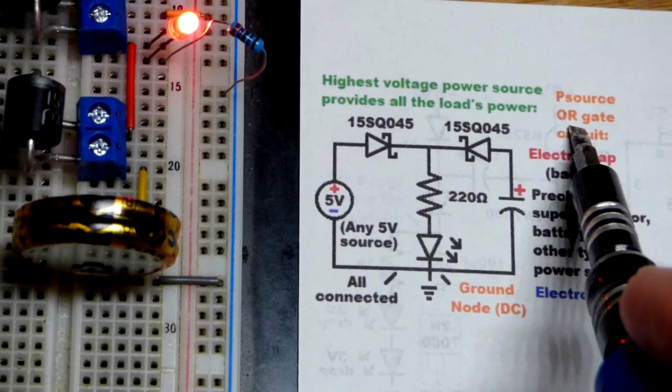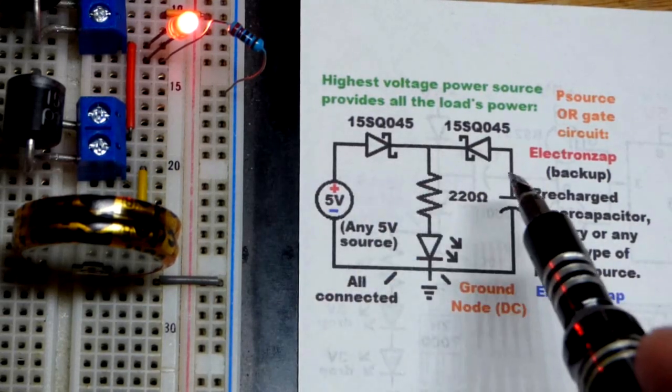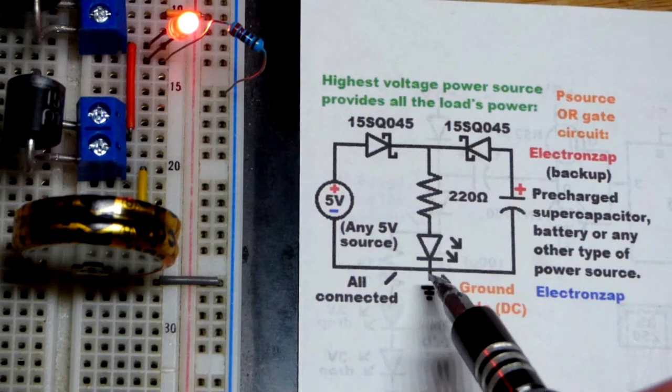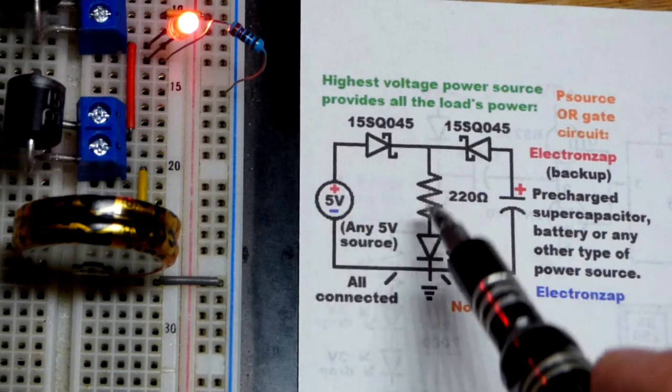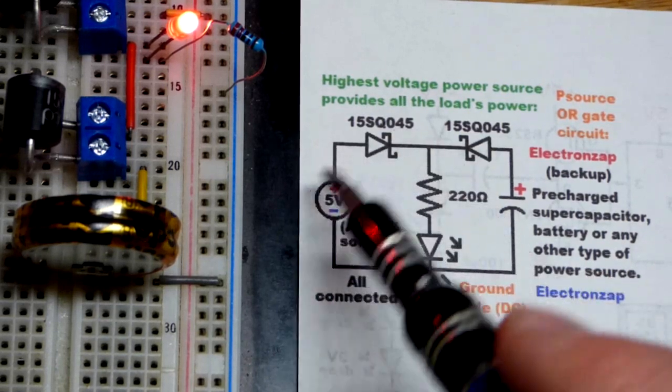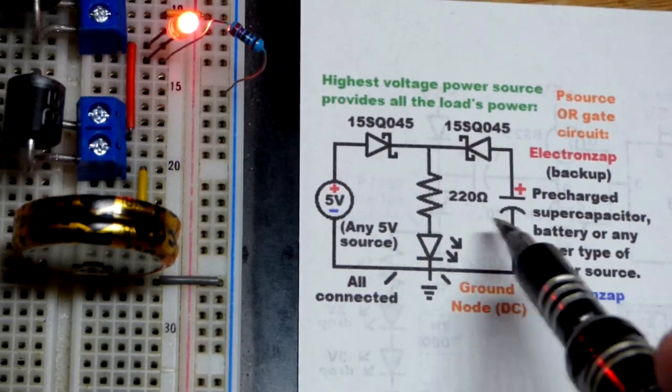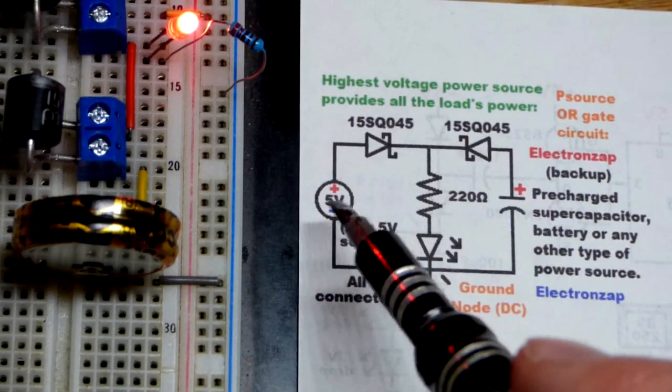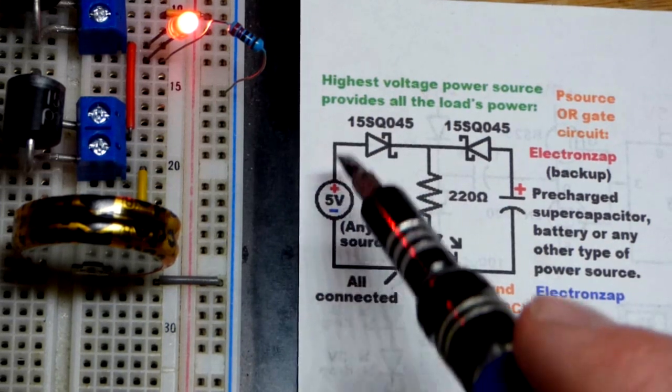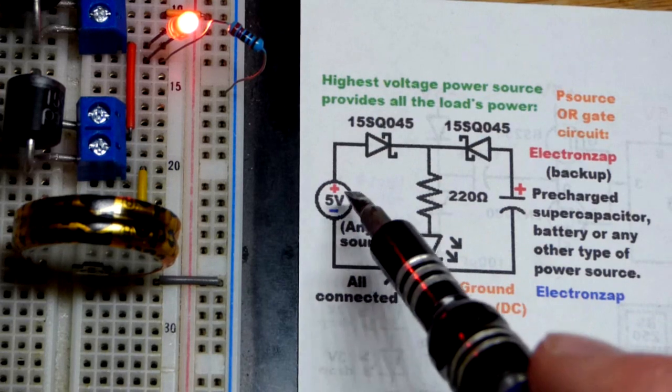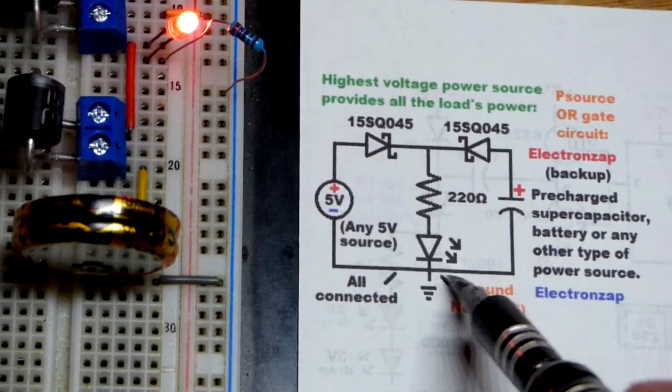So logic gates or gates means that if one input's high, the other input's high, or both of them, then you have a high output. Here we have basically a power source OR gate. So if this has enough voltage, then that will power the load. And if this one has enough voltage, it will power the load. If they both have a full voltage, then the load will be powered. You know, as I said before, it will be powered by the one with the highest voltage. But ultimately, as long as at least one of them has enough voltage, then the load will be powered.